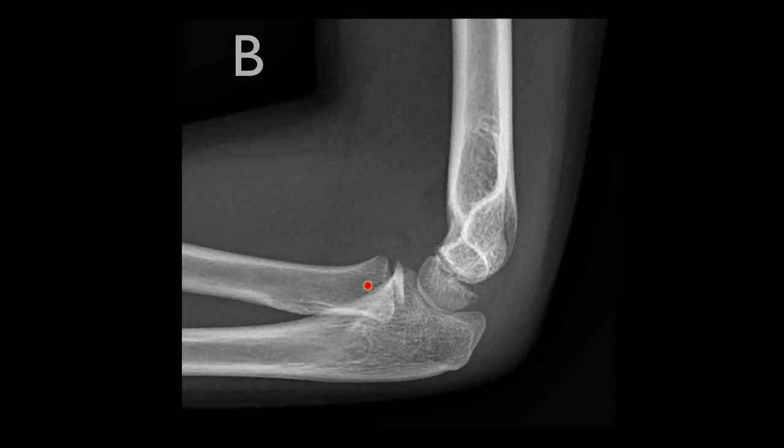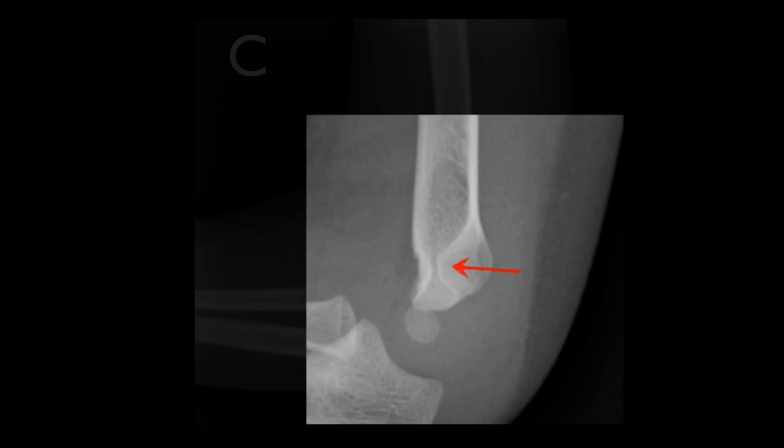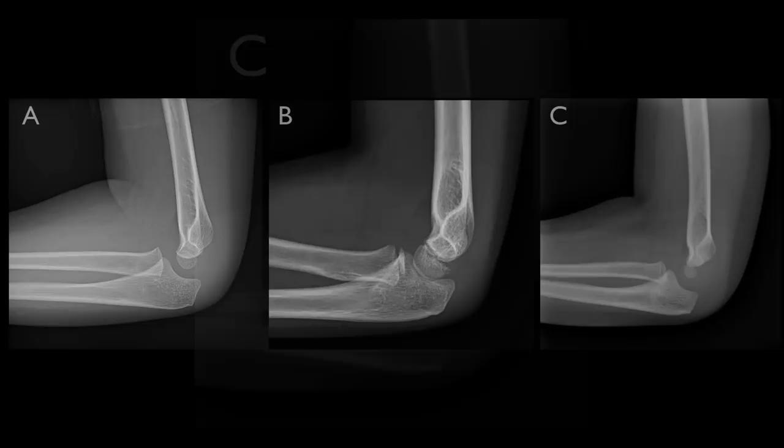Let's move on to case C. Again we can draw in the anterior humeral line and the expected location of the capitellum. Force down the radius has caused posterior displacement of the capitellum. On this occasion there is no evidence of an elbow effusion, but if you look carefully in the olecranon fossa there is irregularity of the cortex caused by the supracondylar fracture.